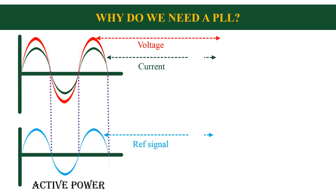And its magnitude should be in between 1 and minus 1. So PLL is used to generate this signal, and this signal is used as the reference for the implementation of the current controller in a grid connected inverter.